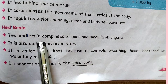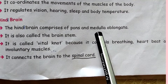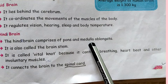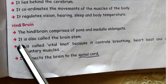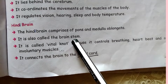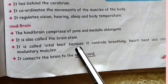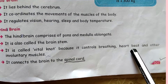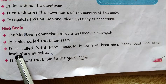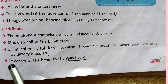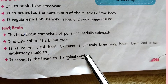Hindbrain: The hindbrain comprises pons and medulla oblongata. It is also called the brain stem. It is called the vital knot because it controls breathing, heartbeat, and other involuntary muscles. It connects the brain to the spinal cord.